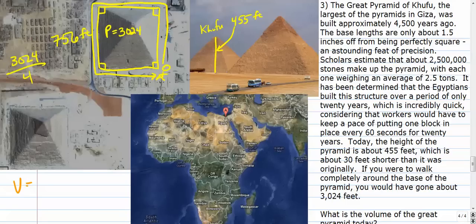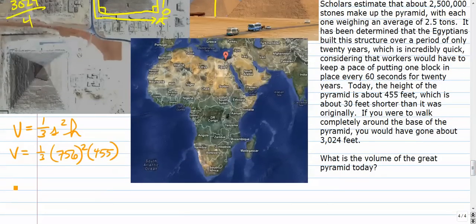So we know that the volume of a pyramid, a square-based pyramid, is side times side times the height times a third. So the side is 756, square that, multiply it by 455. That should give you the volume of the Great Pyramid of Khufu. And if you do that, I think you get about 86,682,960 cubic feet. Let me check that again just to make sure that I didn't do it incorrectly. Yeah, it looks pretty good. That's the correct answer to the question: What's the volume of the Great Pyramid today?